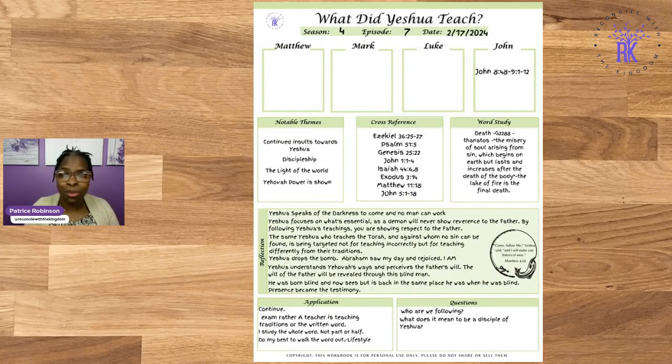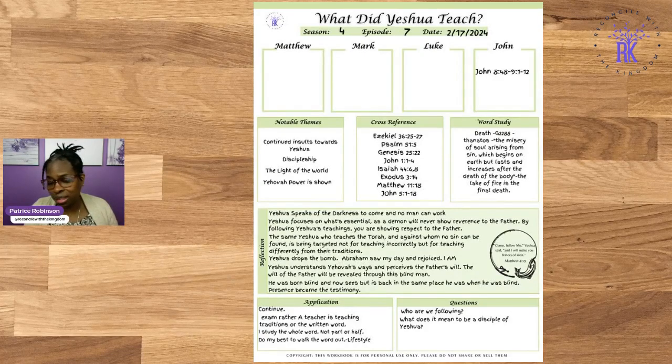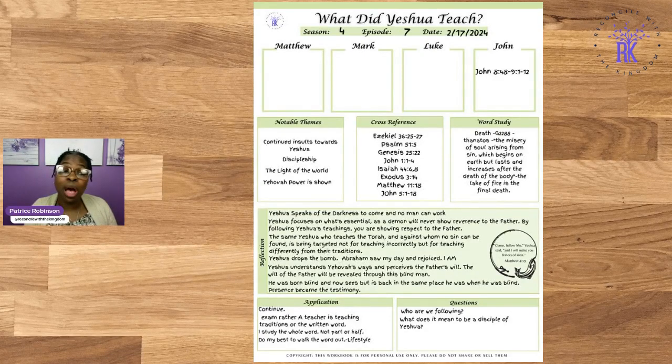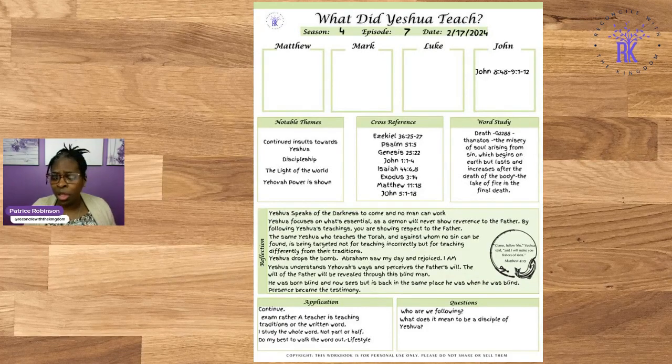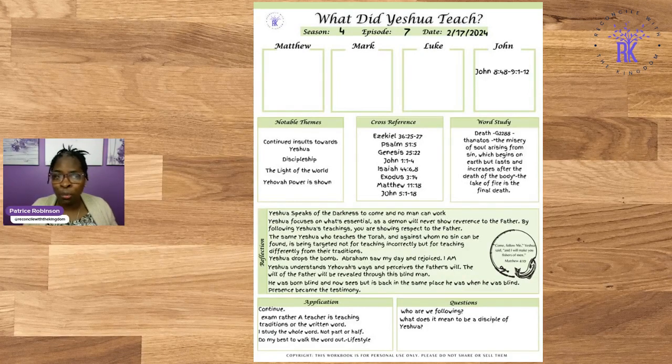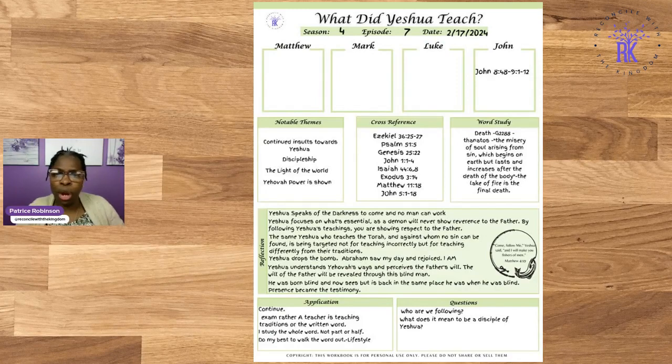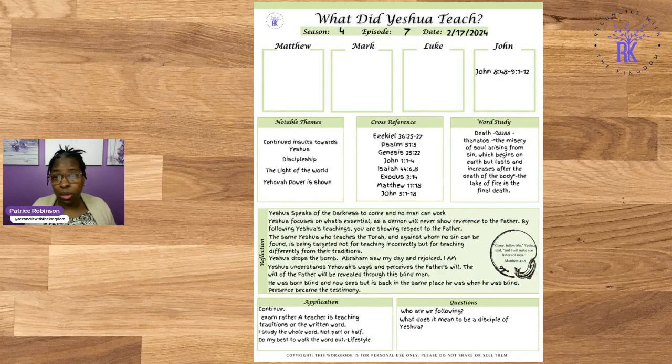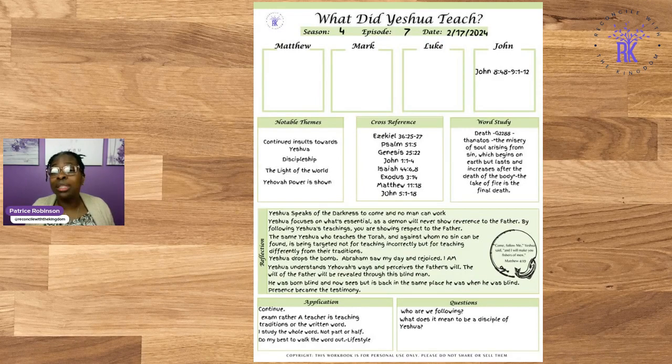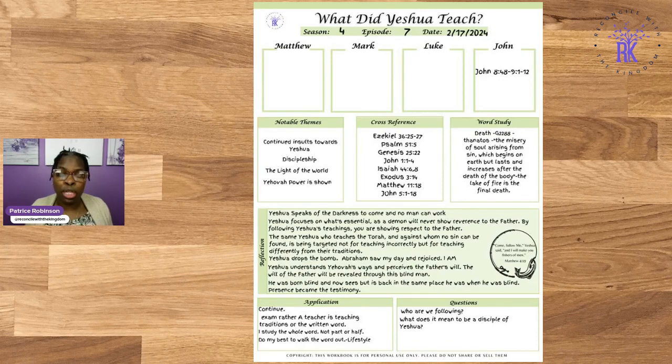Yeshua then drops a bomb on them. I love this. He said Abraham saw his day and rejoiced, and they're like, hey, you're not even 50 years old, how do you know Abraham? But when he said I am, oh, they wanted to stone him to death. My friend, they grabbed stones and he got away. They were going to murder him.